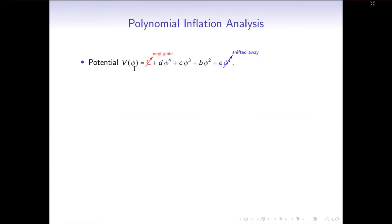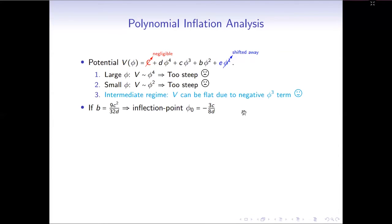Here I expand the potential up to the quartic term. The cosmological constant term turns out to be negligible during inflation, and the linear term can be shifted away. So only three terms left. However, in both the very large and small phi regime, the potential are still too steep because the power is larger than 1 and are ruled out by the bound for R. However, in some intermediate regime, this potential can be flat, mainly due to the contribution from the cubic term.